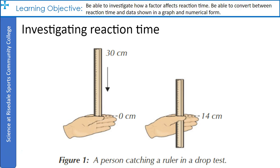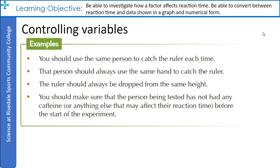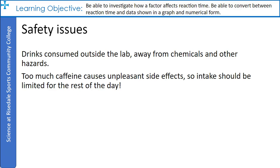Repeat the test several times and calculate the mean distance that the ruler fell. The person being tested should then have a caffeinated drink — for example a glass of Coca-Cola — and after 10 minutes repeat the test. When carrying out this investigation, control variables included: the same person catching the ruler each time, always using the same hand (the weaker hand), the ruler always dropped from the same height, and ensuring the person had not consumed any caffeine before the start of the experiment.